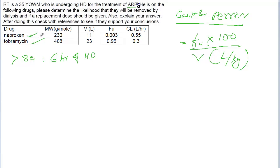The molecular weight of naproxen is 230 grams per mole, and tobramycin is 468 grams per mole. The volume of distribution in liters is 11 and 23, and the fraction unbound is 0.003 and 0.95, and the clearance is 0.5 and 0.3.